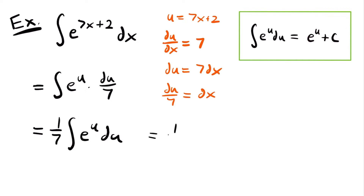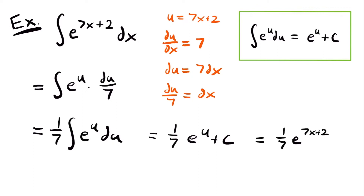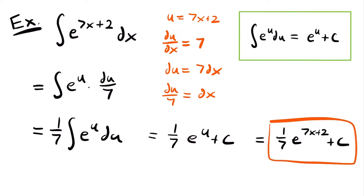Using our rule, this will be equal to 1 seventh times e to the power of u plus c. Our last step is to replace u with what we set it equal to, which is 7x plus 2. So our final answer is 1 seventh times e to the power of 7x plus 2 plus c. That is the antiderivative of this function.